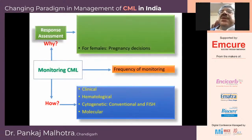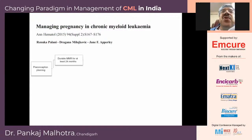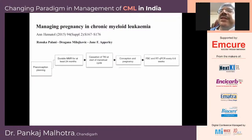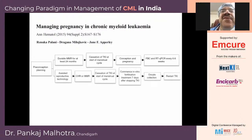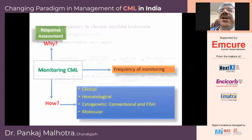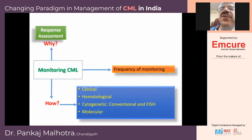For female patients, monitoring informs pregnancy decisions. If a patient has durable MMR for at least 24 months, you stop the TKI at the start of the menstrual cycle, allow conception and pregnancy, and monitor the patient by qPCR every six to eight weeks. With assistive reproductive technology, once the patient achieves CHR or MMR, you stop the TKI, commence in vitro fertilization and oocyte collection, and then restart TKI. This approach helps patients start their family life.